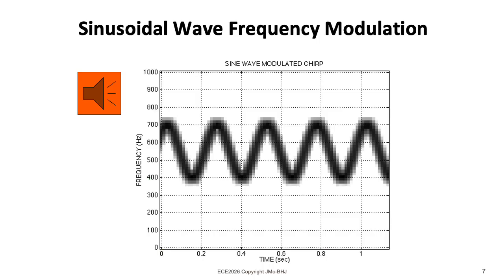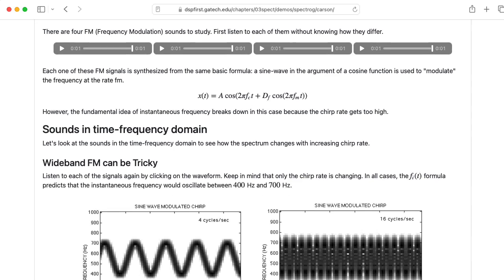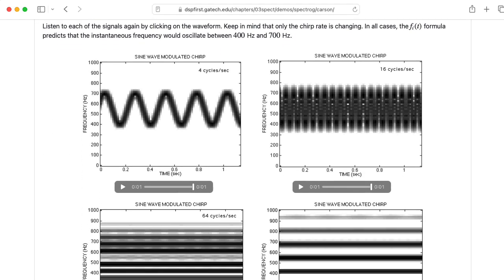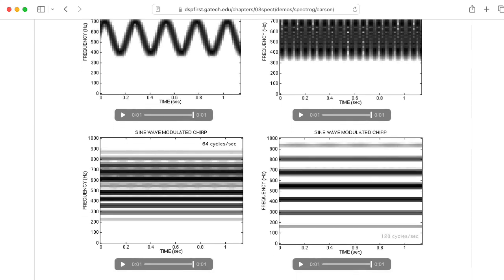Now, in all of the examples in this lecture, the instantaneous frequency changed slowly enough that you actually perceived it as a changing frequency. If you create some kind of frequency modulation scheme where you start cranking up the frequency modulation, eventually you don't perceive that frequency variation anymore. You get to the point where you perceive entirely new kinds of timbres.